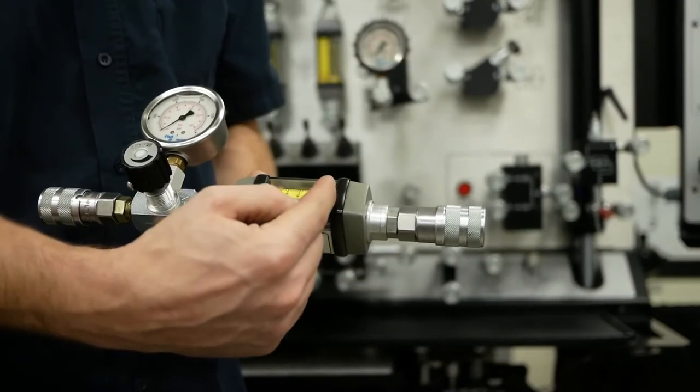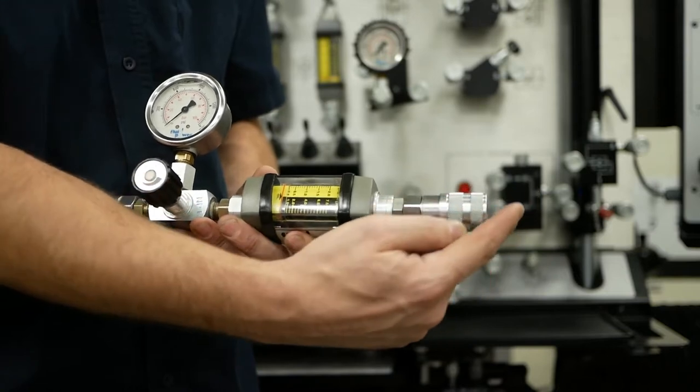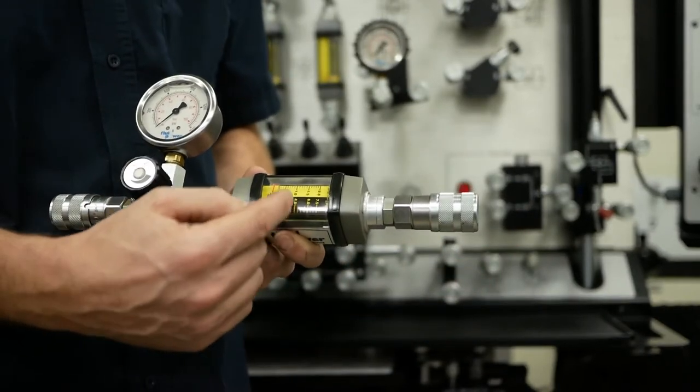We're going to send the flow through the flow meter, and it's going to go back through this line. We're going to connect that back to the tank on the board. That's going to give us a reading.